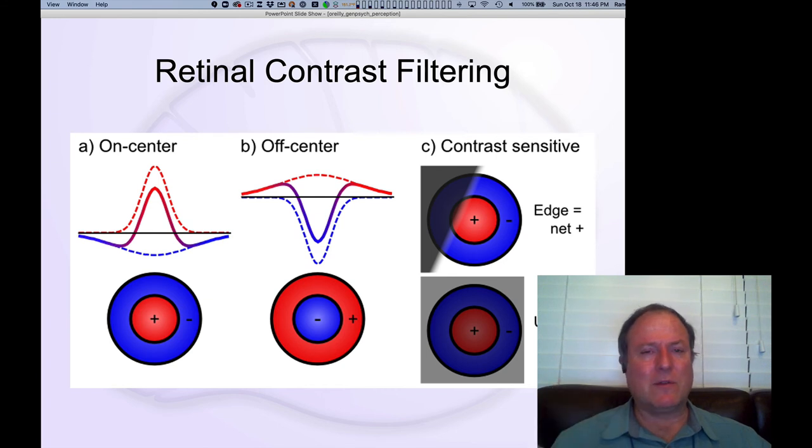This is again the same principle of contrast. The contrast is all about tell me the news, tell me something different. In the visual system, in the visual scene, where things change - that's where something's new or different. So right there in the retina, it's already filtering out anything that's consistent and only focusing on places where you have changes in light.